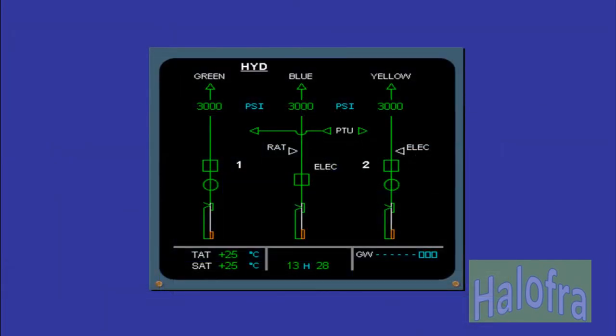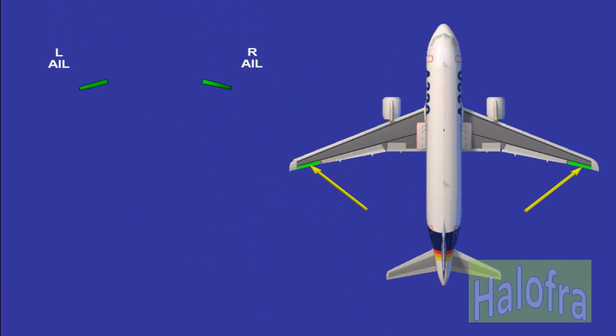Three independent hydraulic systems are used to power all the flight control surfaces. The flight control system incorporates ailerons. Each aileron is powered by two servo controls from independent hydraulic systems. In normal operation, one servo control is active through the ELAC, the other one being damped. Surface position indication is displayed on the ECAM display unit.